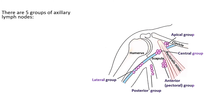There are five groups of axillary lymph nodes, which we can see in this picture: the apical, central, anterior or pectoral group, posterior or subscapular group, and lateral or humeral group.